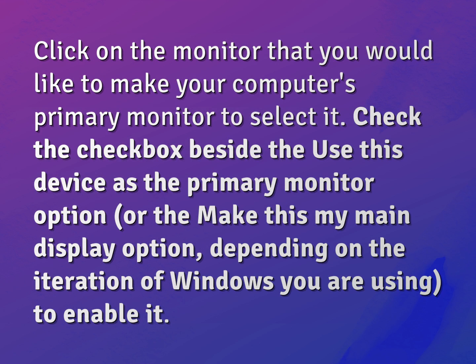Click on the monitor that you would like to make your computer's primary monitor to select it. Check the checkbox beside the 'Use this device as the primary monitor' option, or the 'Make this my main display' option, depending on the iteration of Windows you are using to enable it.